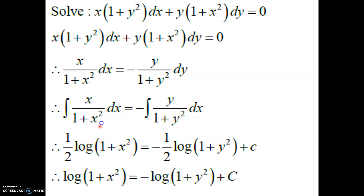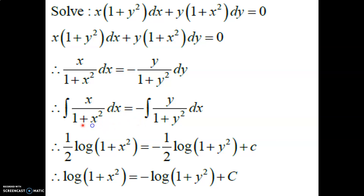Example using separation of variables: x(1+y²)dx + y(1+x²)dy = 0. We separate terms: 1+y² is one group, 1+x² is another. Shift y(1+x²)dy to the other side, then divide: x/(1+x²) dx = −y/(1+y²) dy. This separates the x and y variables, so we can integrate both sides.